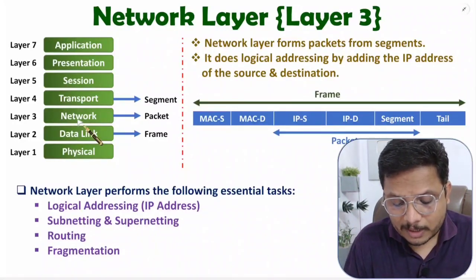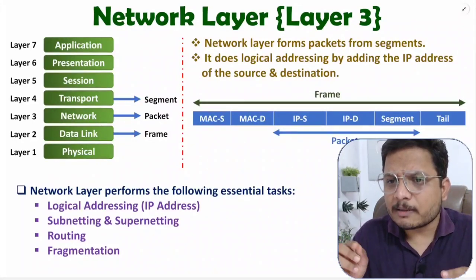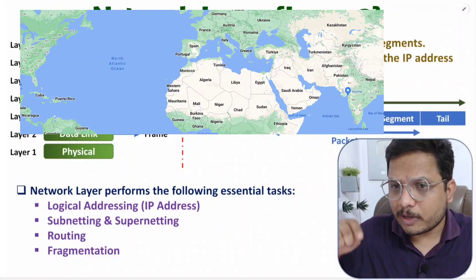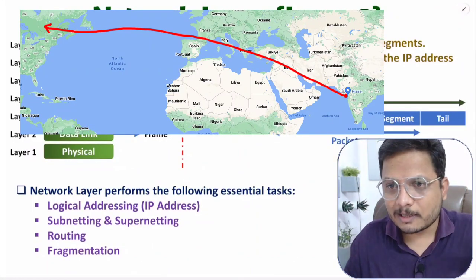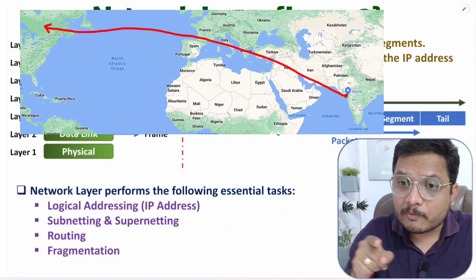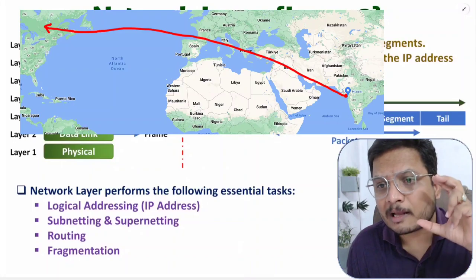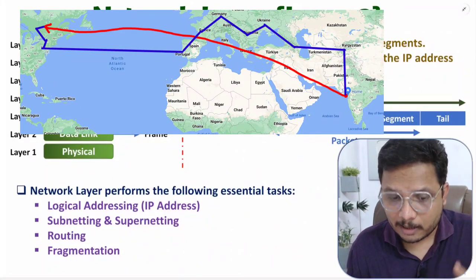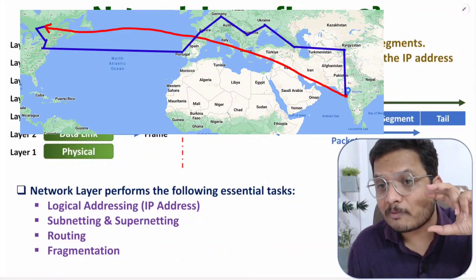The third task is routing, which means path determination. For example, if I am in India and want to transfer data to Canada, this computer network is very large and there will be many intermediary nodes. Routing decides the exit path for that data transmission. There are many interesting routing algorithms by which path determination happens, and that is referred to as routing.